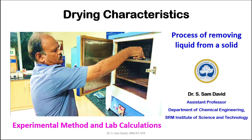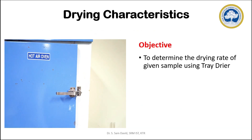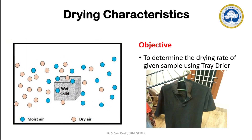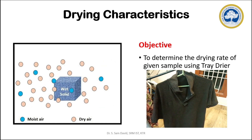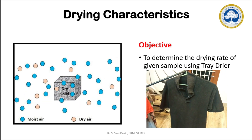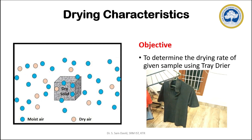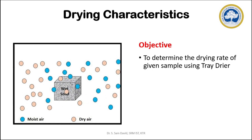In this video, I am going to discuss one of the experiments in the mass transfer laboratory: drying characteristics. Drying is a process of removing water from a wet solid. The objective of this experiment is to find the drying rate of a given sample using a tray dryer. The application is to find the time required for drying a wet material — for example, the time required to dry a wet shirt under prevailing environmental conditions. In this experiment, we will calculate the drying rate, that is, the time required for removing water from a wet solid.